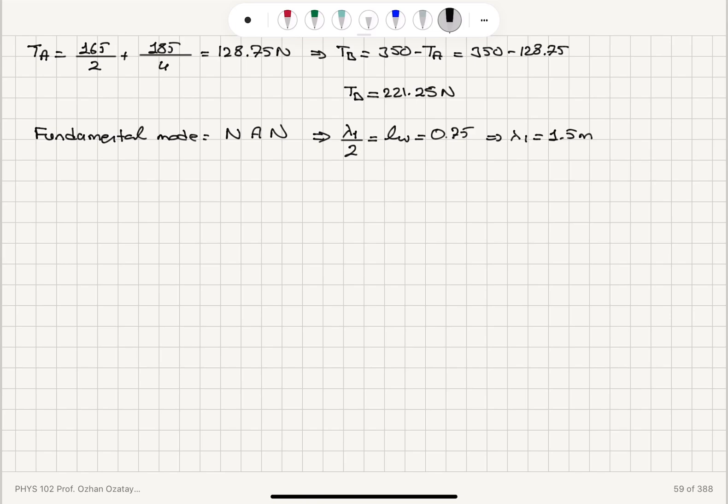Now, propagation speed of waves on A will be lambda_1 times the frequency of oscillation of wire A. So F_A is basically 1 over lambda_1 square root tension on A divided by mass per unit length. Now, what is the mass per unit length?